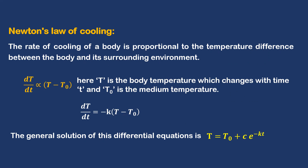Newton's Law of Cooling states that the rate of cooling of a body is proportional to the temperature difference between the body and its surrounding environment. The rate of change in temperature of the body is proportional to the difference of the temperature of the body and that of the surrounding medium. Here, capital T represents the temperature of the body, T₀ represents the temperature of the medium, and small t represents time.